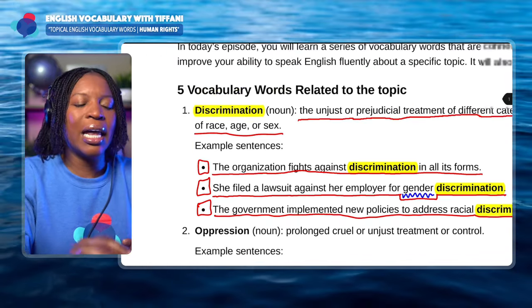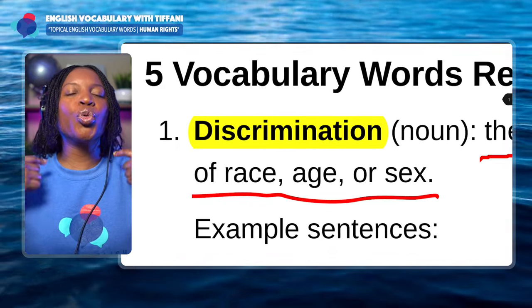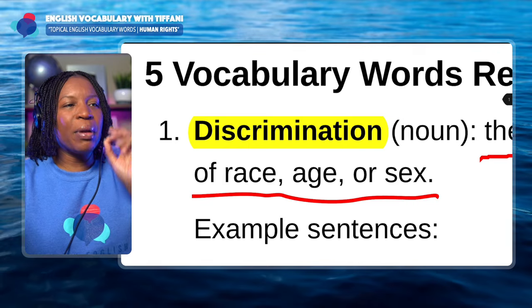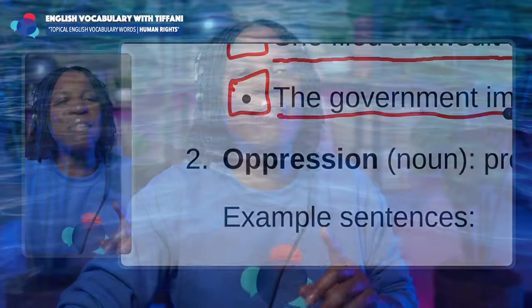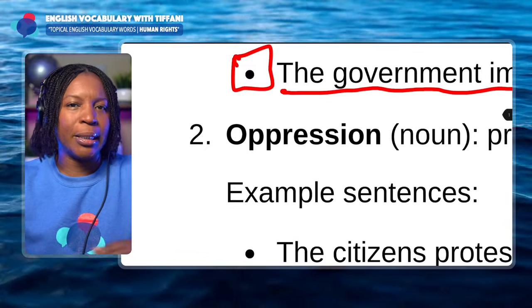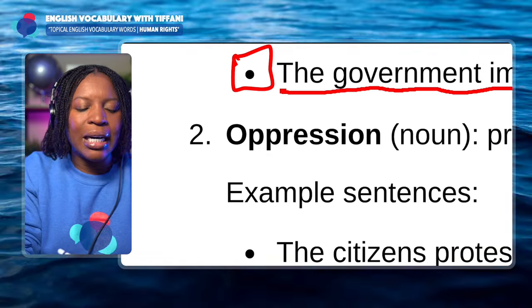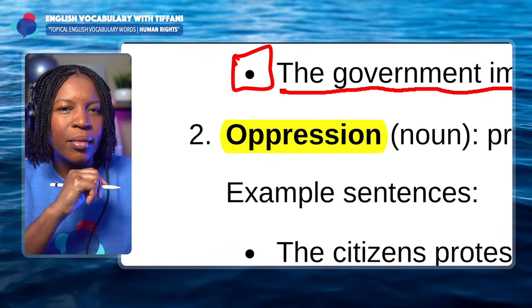So again, the first word is discrimination. Remember, we're speaking about the topic of human rights — the rights that people have. As human beings, whether female or male, we have certain rights, things we are due and entitled to. Now let's move on to vocabulary word number two. Repeat after me: oppression.